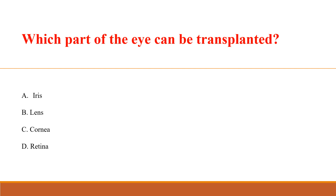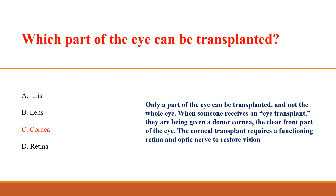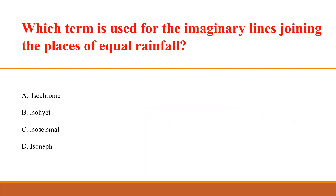Which part of the eye can be transplanted? Answer C: Cornea. Only a part of the eye can be transplanted, not the whole eye. When someone receives an eye transplant, they are given a donor cornea — the clear front part of the eye. The corneal transplant requires a functioning retina and optic nerve to restore vision.